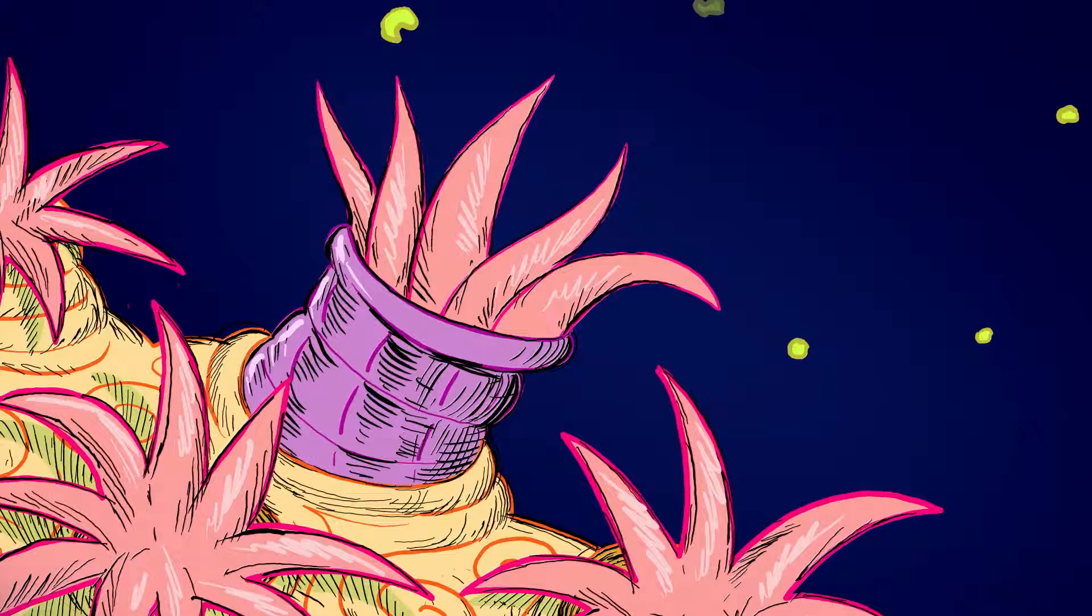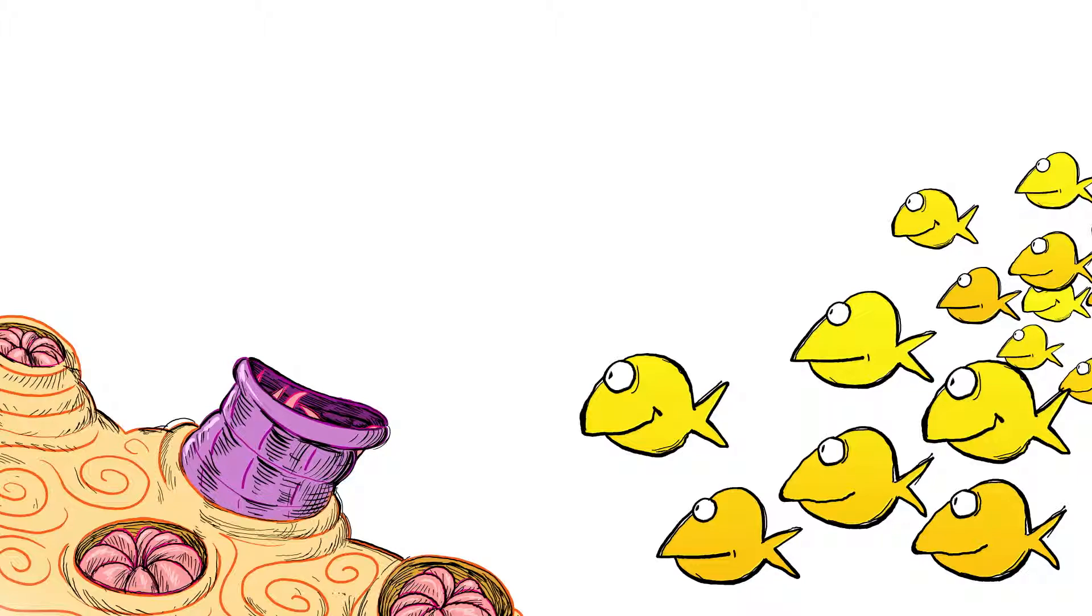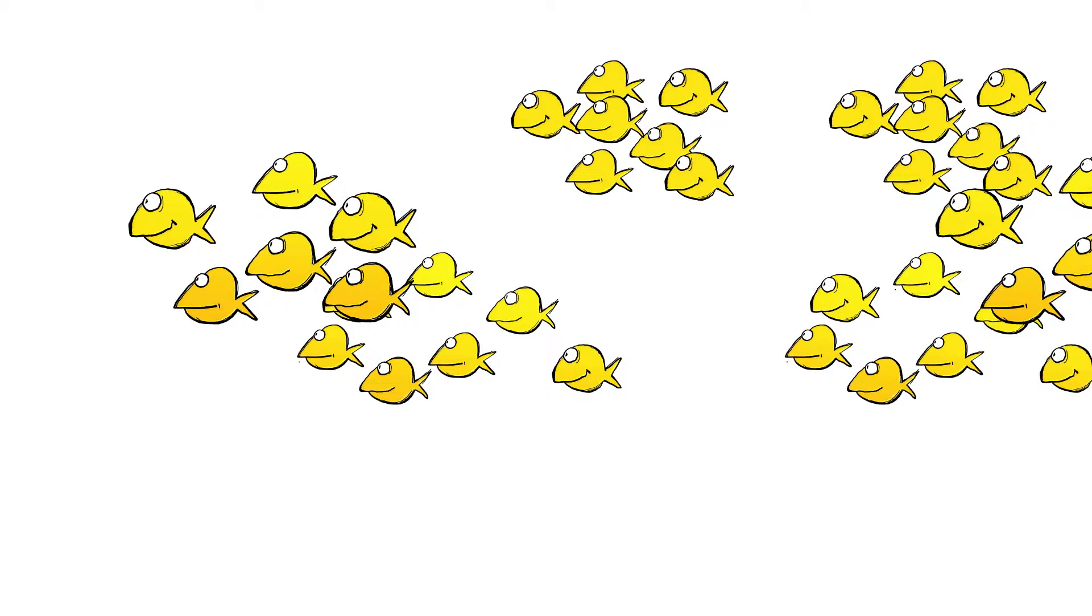Inside the tissue of each polyp lives a kind of algae, which uses sunlight to synthesize food for the polyp. The polyp and the algae are dependent on one another for food and shelter.